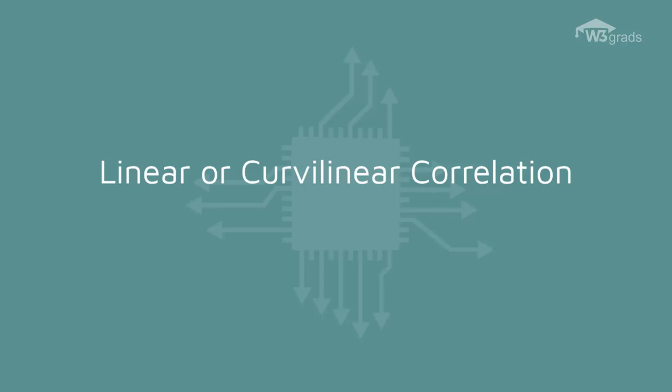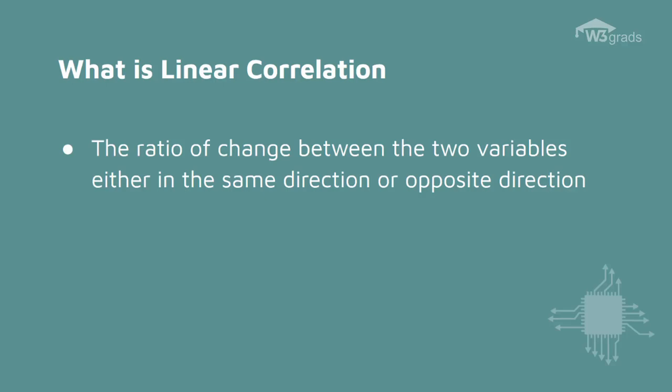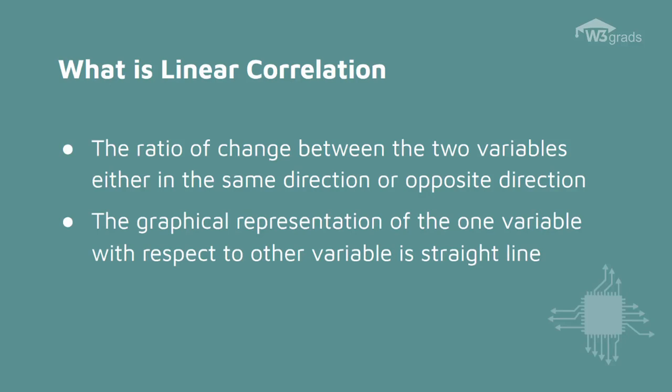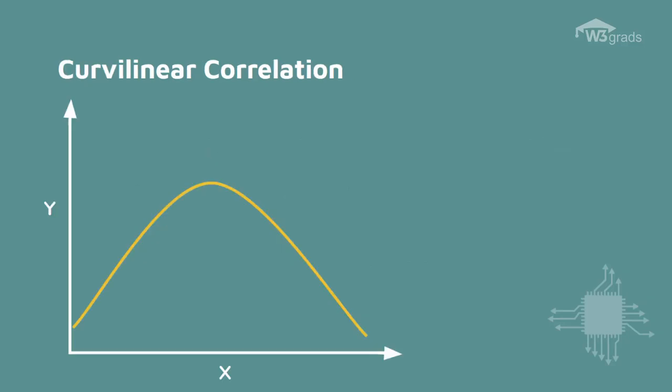The next type of correlation used in machine learning is the linear or curvilinear correlation. Linear correlation is the ratio of change between the two variables, either in the same direction or opposite direction. Linear correlation is the graphical representation of one variable with respect to the other variable as a straight line.